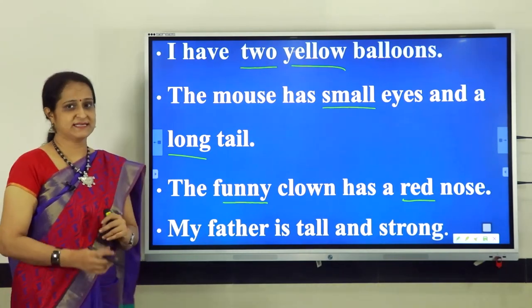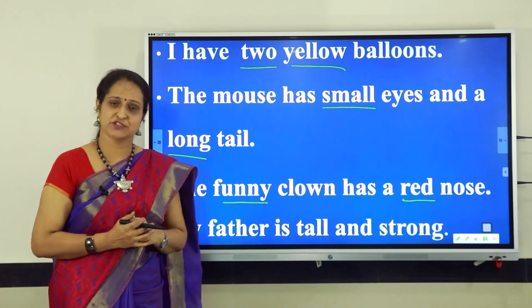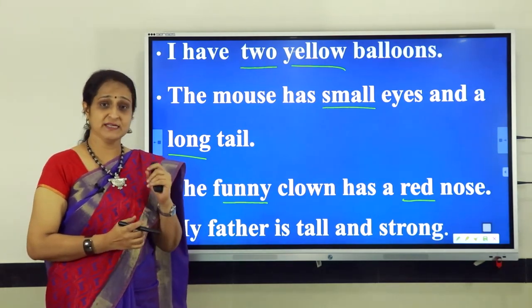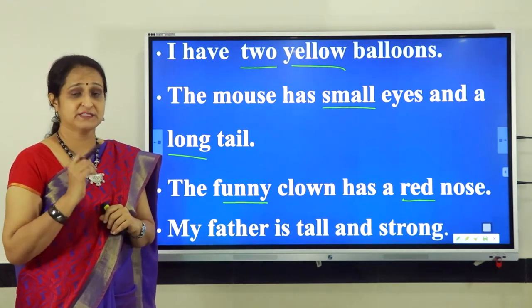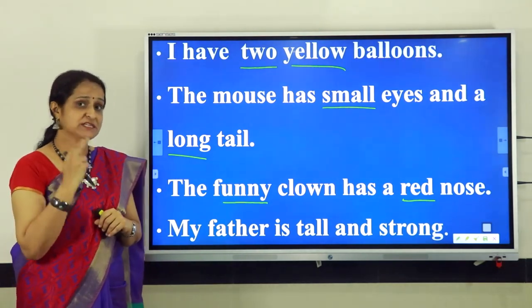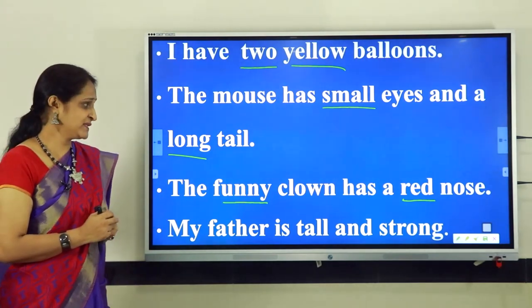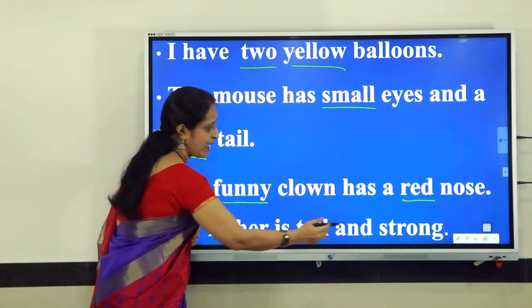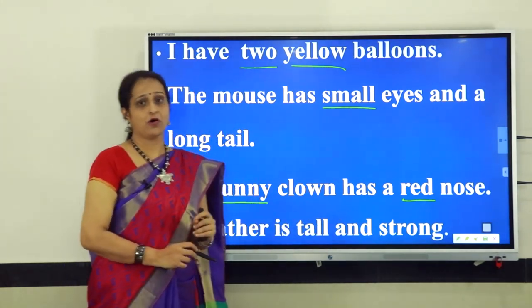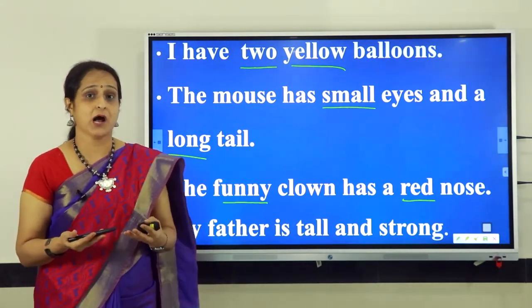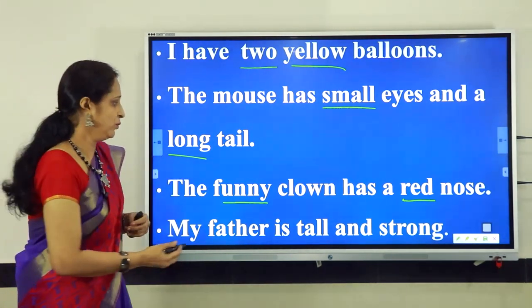The last sentence: My father is tall and strong. In this sentence we have only one noun and that is father. But we have two describing words for the noun father: tall and strong. The words tall and strong tell us more about the noun father. Let us underline these describing words.